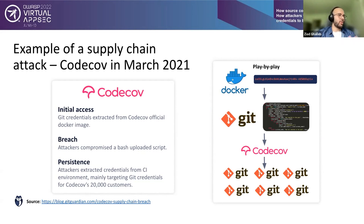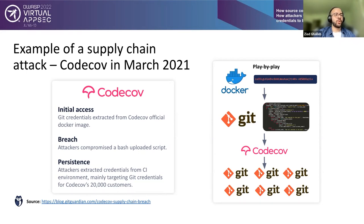Based on disclosures, the attackers exploited many companies — the total number is put at 20,000 customers. This shows the importance of keeping git repositories and Docker images clean from secrets and ensuring that production credentials do not end up in such areas.